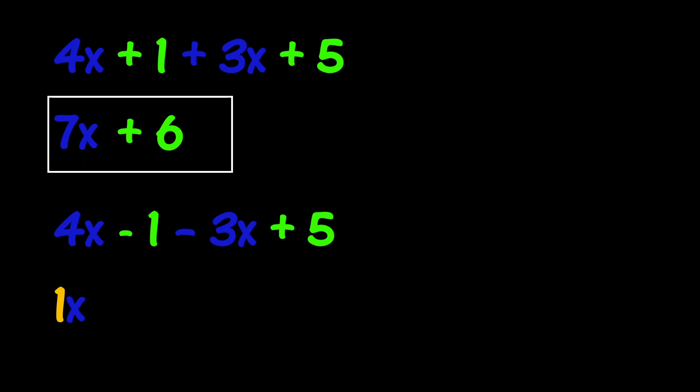Next, we will need to do the same with our constants. 5 minus 1 is 4. This leaves us with 1x plus 4.